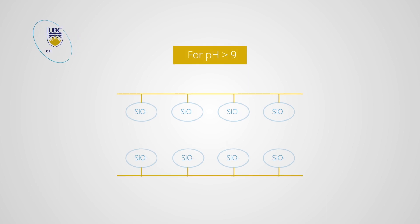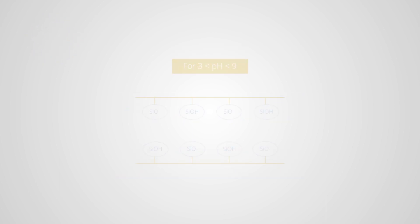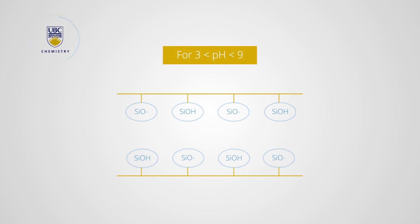However, when the pH is greater than 9, the capillary wall is almost completely deprotonated. If the pH is somewhere in between, the wall is partially protonated and partially negatively charged silicon oxide.